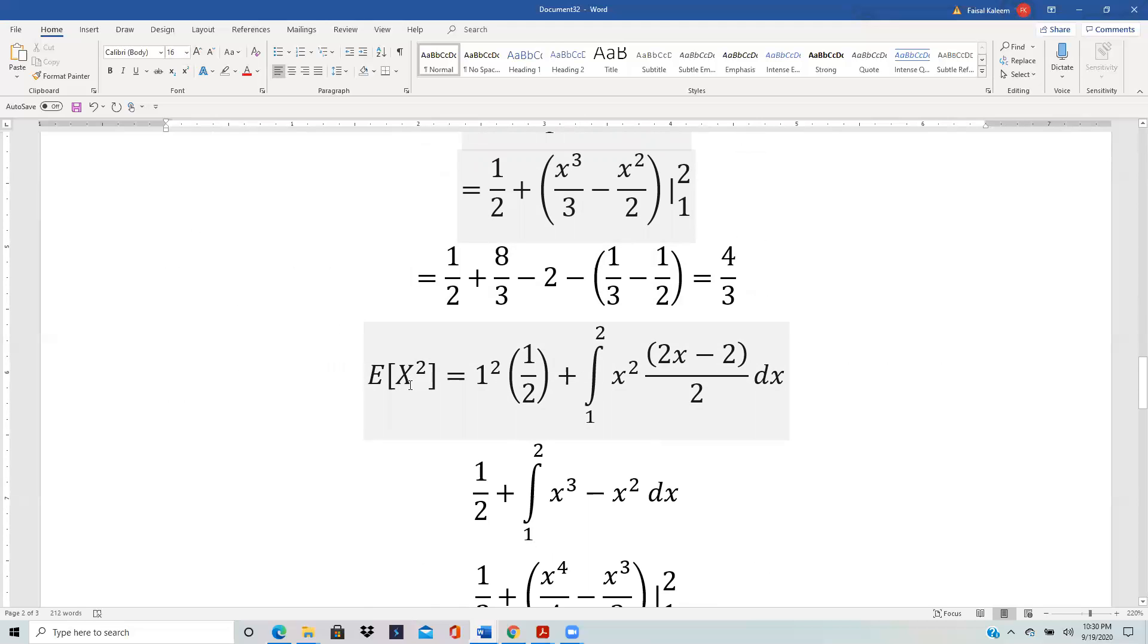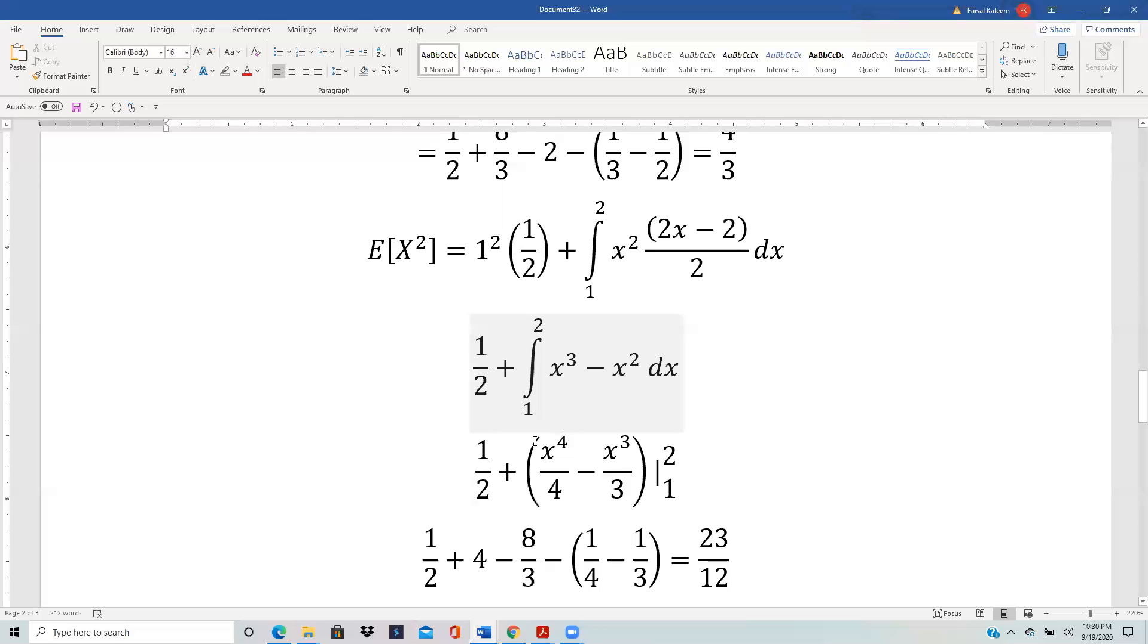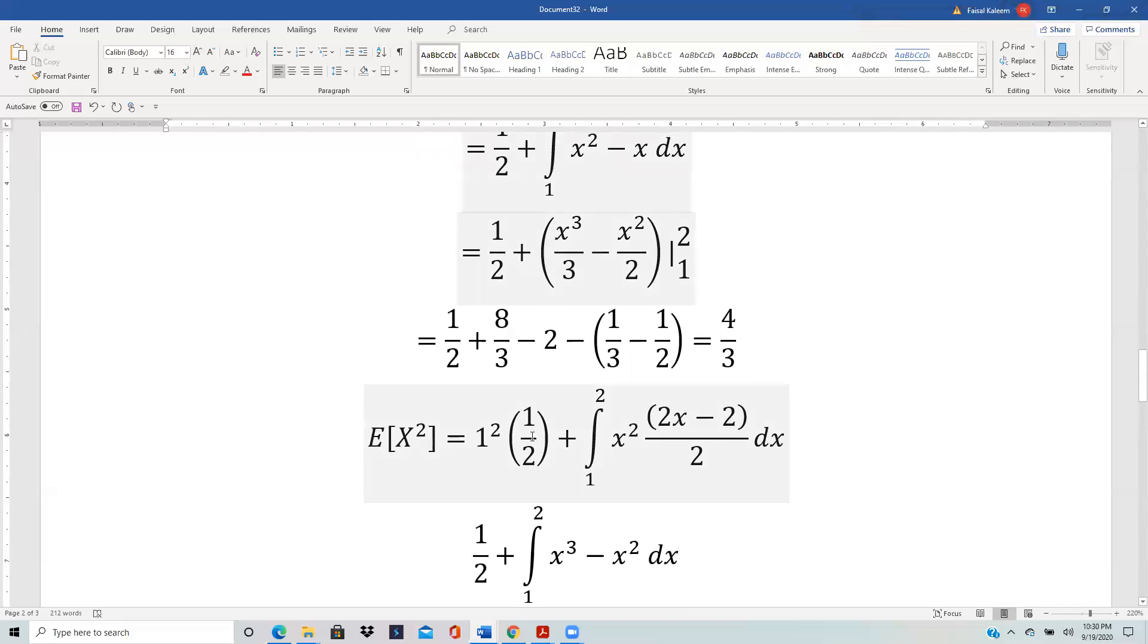Similarly, for E[X²], for the discrete variable it's summation of x²f(x). The only value where we have a discrete situation is here, so x² is 1² and f(x) is a half. So 1² times a half. And then for the continuous it's the expected value of x², which is the integral of x² against the f(x).